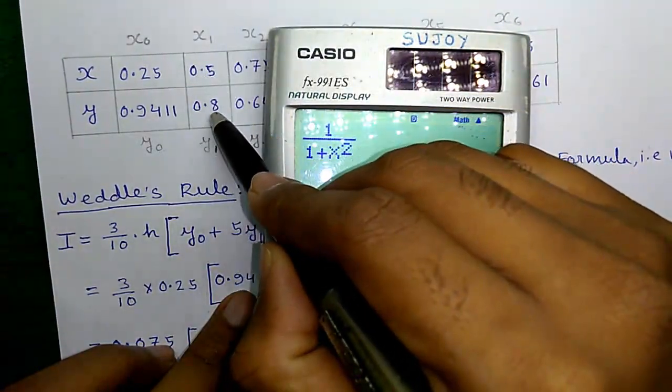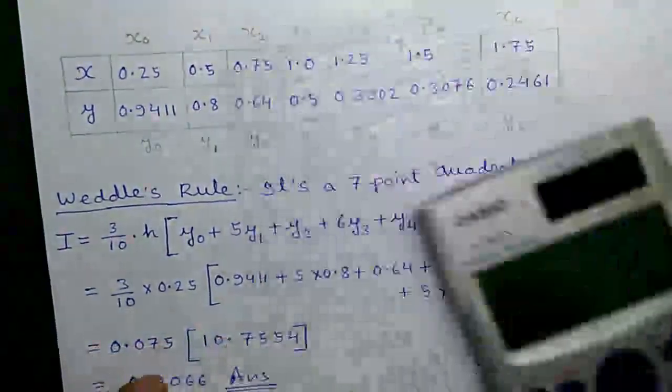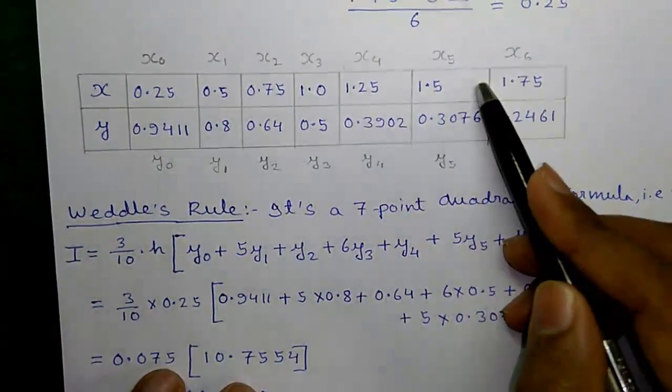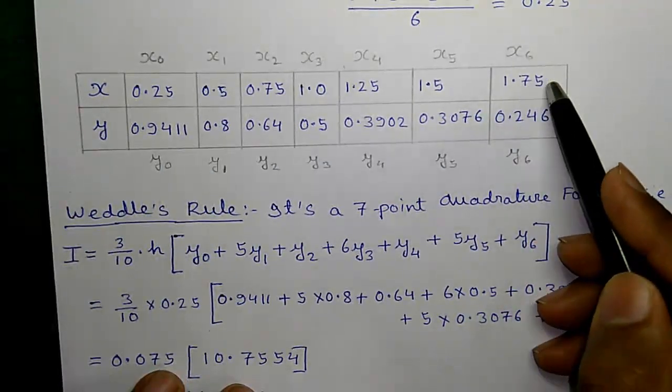For x equals to 0.5, y will be 0.8. Similarly, find out the whole table up to x equals to 1.75.